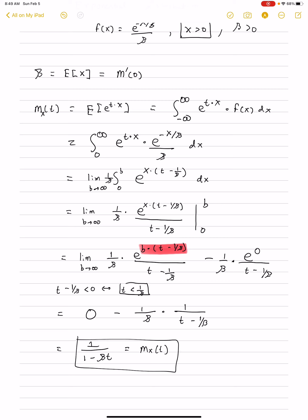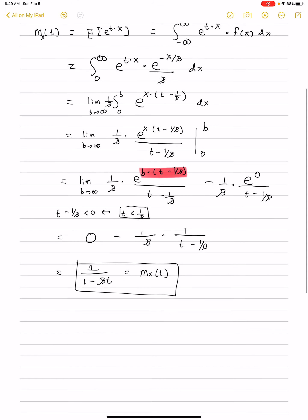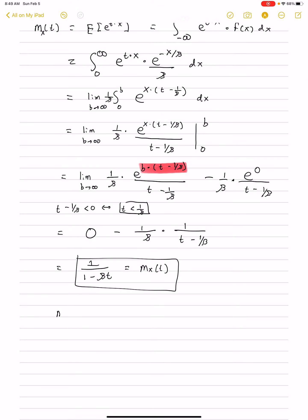Now, next, we need to take the derivative. So, let's do that. So, we need to differentiate with respect to the variable t. Another way of writing this is 1 minus beta t to the minus 1 power. So, differentiating this will just involve the chain rule. Otherwise, you would use the quotient.